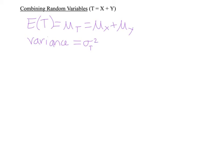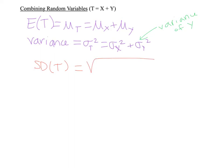The variance of something is the standard deviation squared, so we are allowed to add our variances. The standard deviation of T is found by taking the square root of the variance of T, which is the square root of the standard deviation of X squared plus the standard deviation of Y squared. This might look similar to the Pythagorean theorem — it's actually the same idea: two things squared added together, solved by taking the square root.